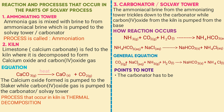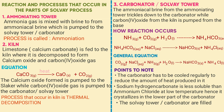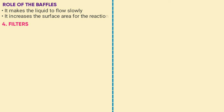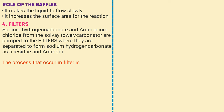The carbonator has to be cooled regularly so as to reduce the amount of heat produced in it. Sodium hydrogen carbonate is less soluble than ammonium chloride at low temperatures; hence it crystallizes in the lower part of the carbonator. The Solvay tower is usually made of bubbles, whose role is to make the liquid flow slowly to increase surface area for the reaction. After formation of sodium hydrogen carbonate and ammonium chloride, the two substances are pumped to the filters where they are separated. The process that occurs in the carbonator is called carbonation, and the process in the filter is called filtration.